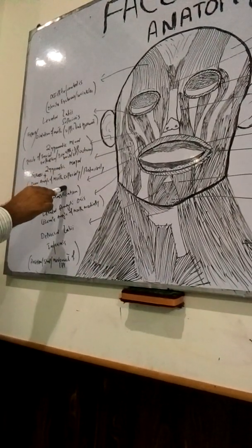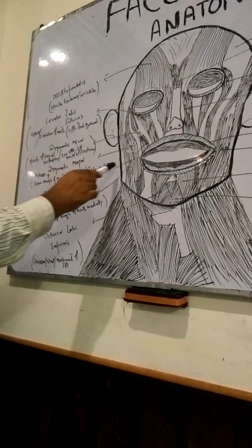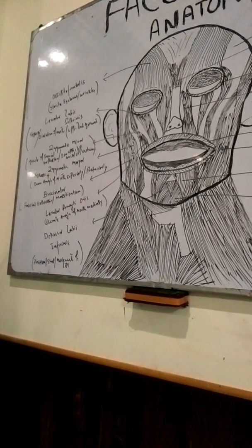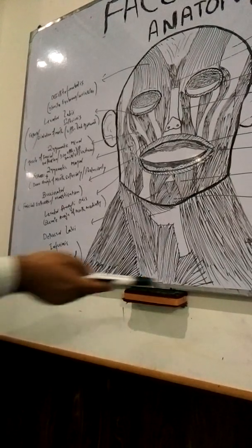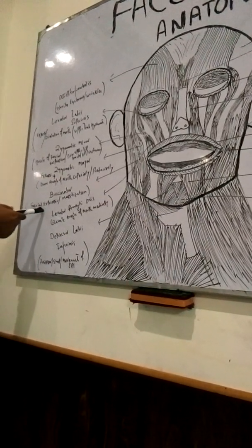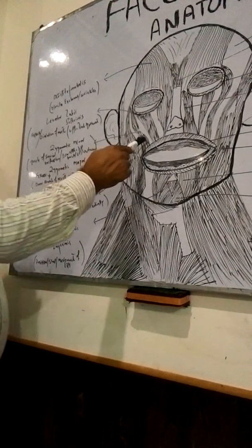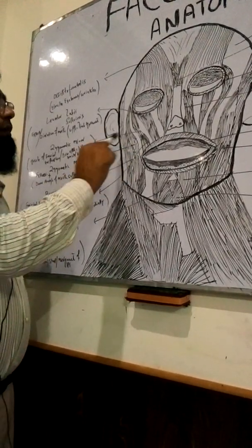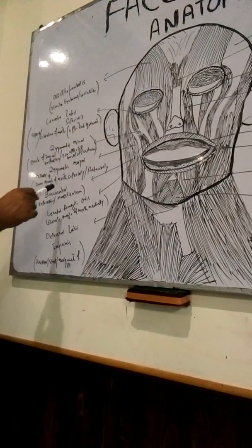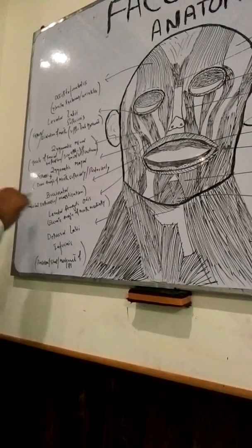This region is called the buccinator muscle. The buccinator muscle helps in facial expression and also helps in mastication — the chewing of food. It is a major muscle that helps in mastication.